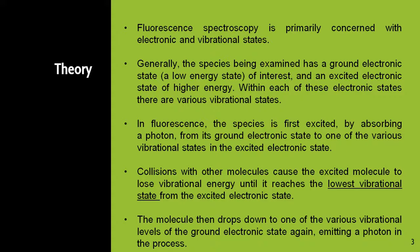Within the lowest energy state and the higher energy state there are certain electronic states often referred to as vibrational states. In fluorescence, the species is first excited by absorbing a photon from its ground electronic state to one of the various vibrational states in the excited electronic state. Collisions with other molecules cause the excited molecule to lose vibrational energy until it reaches the lowest vibrational state of the excited electronic state. The molecule then drops down to one of the various vibrational levels of the ground electronic state, and during this process it emits a photon.